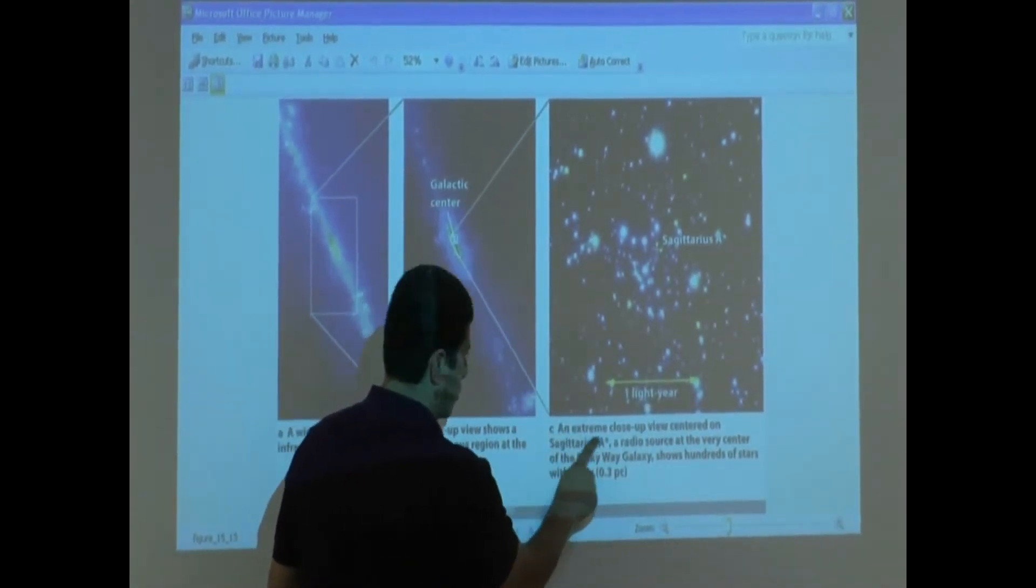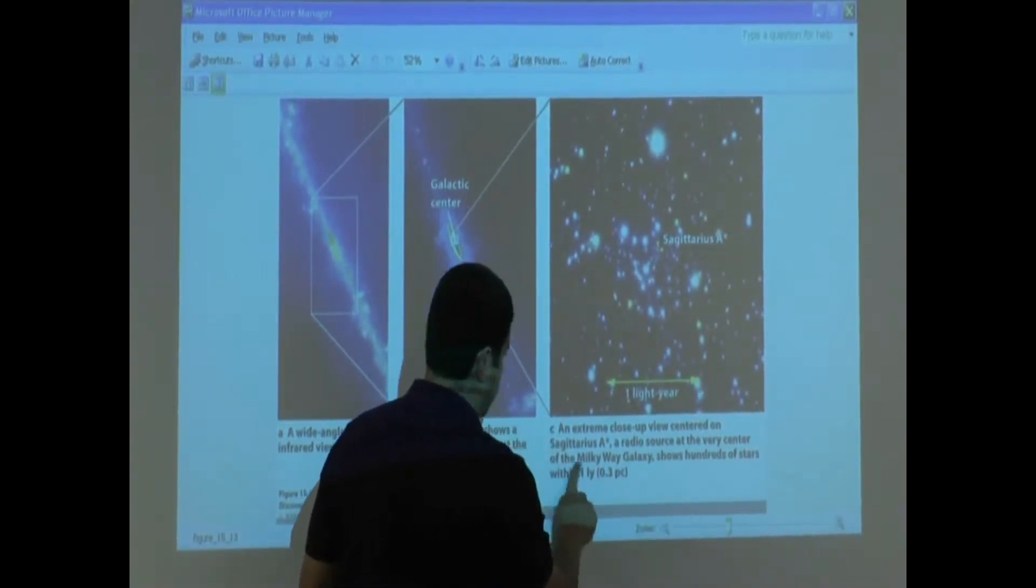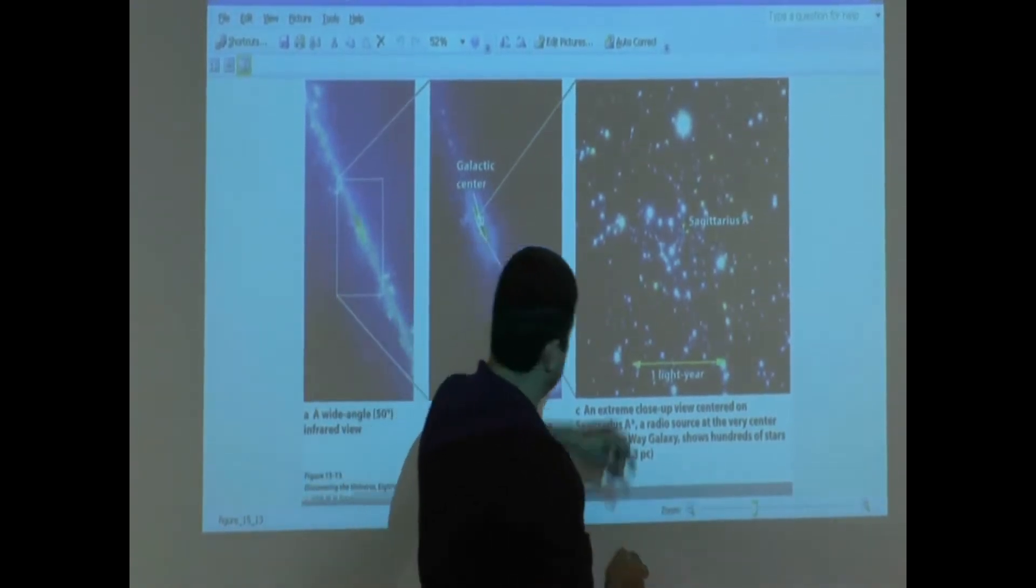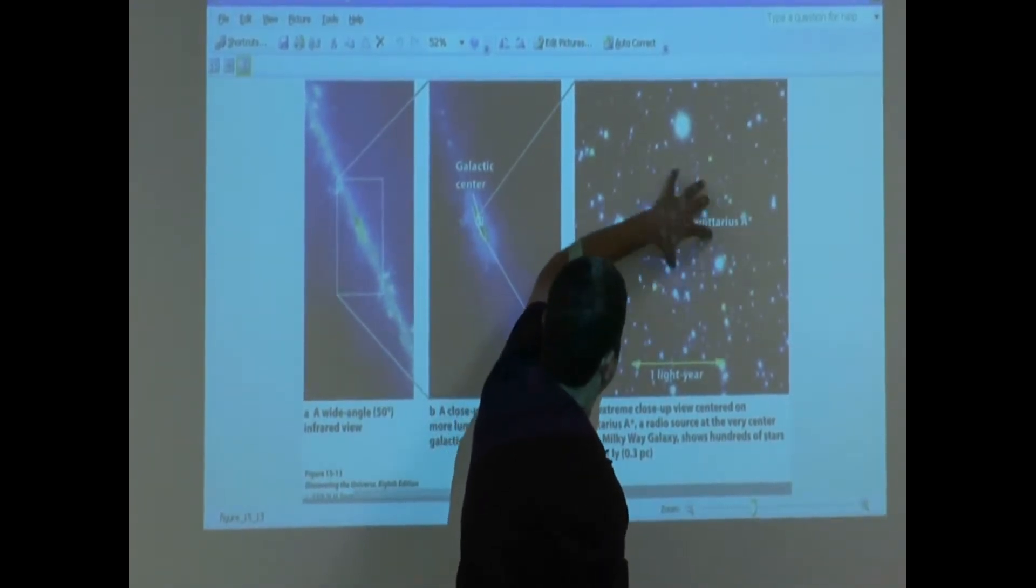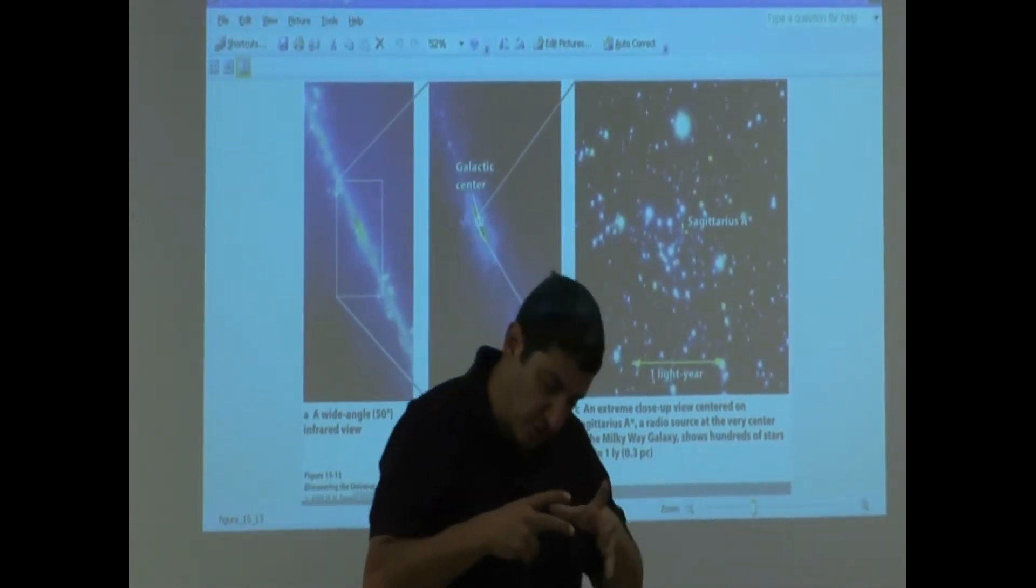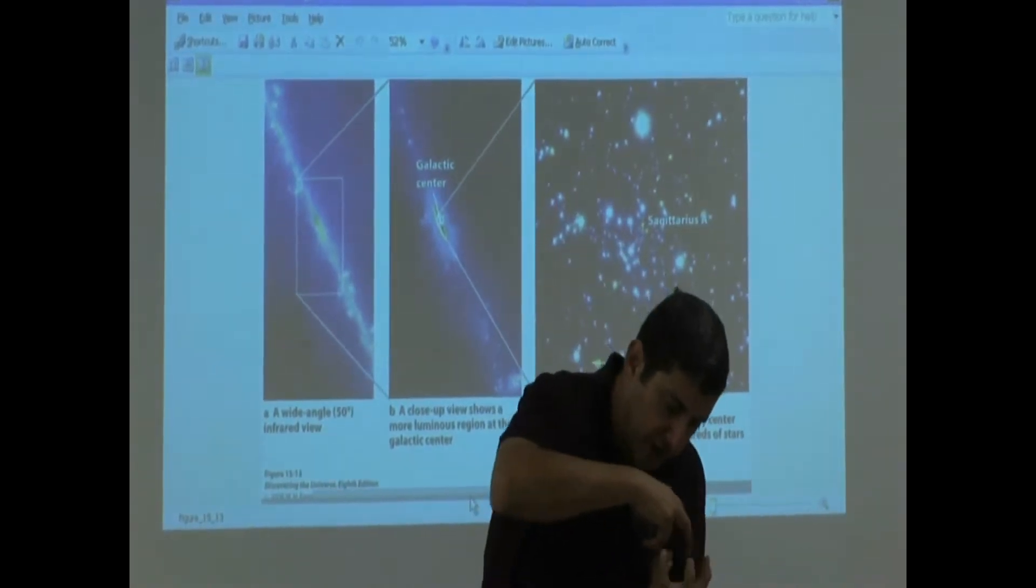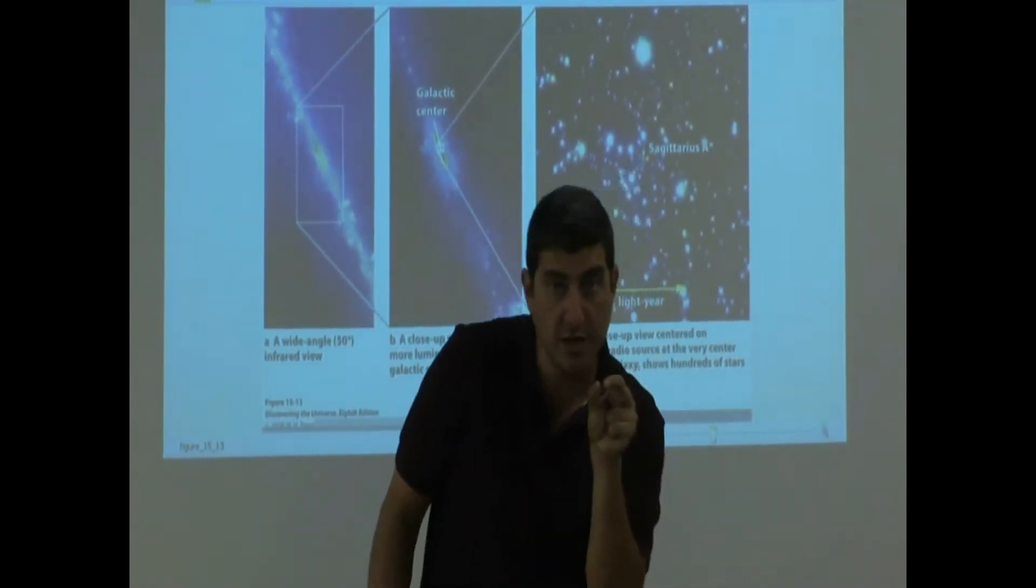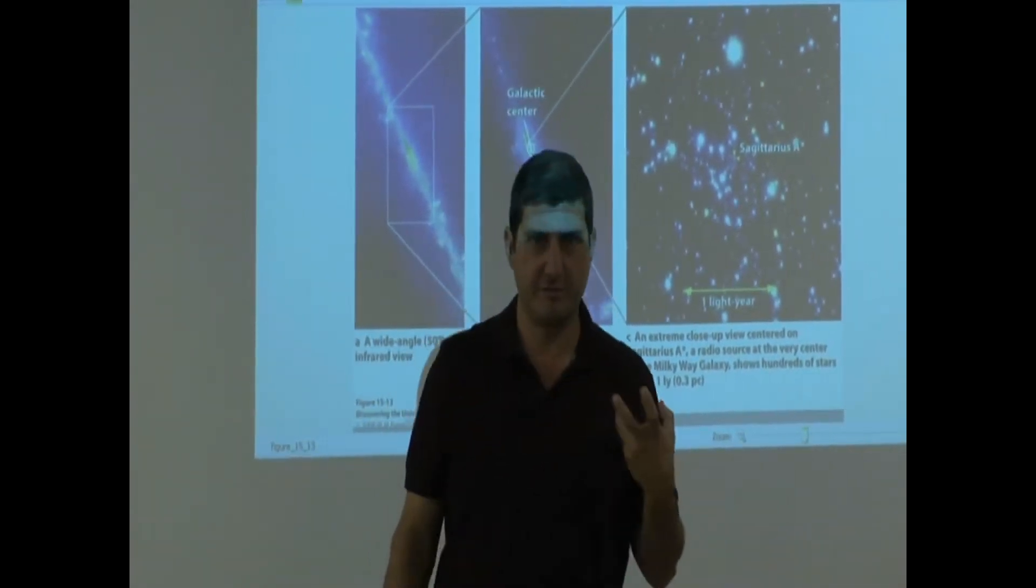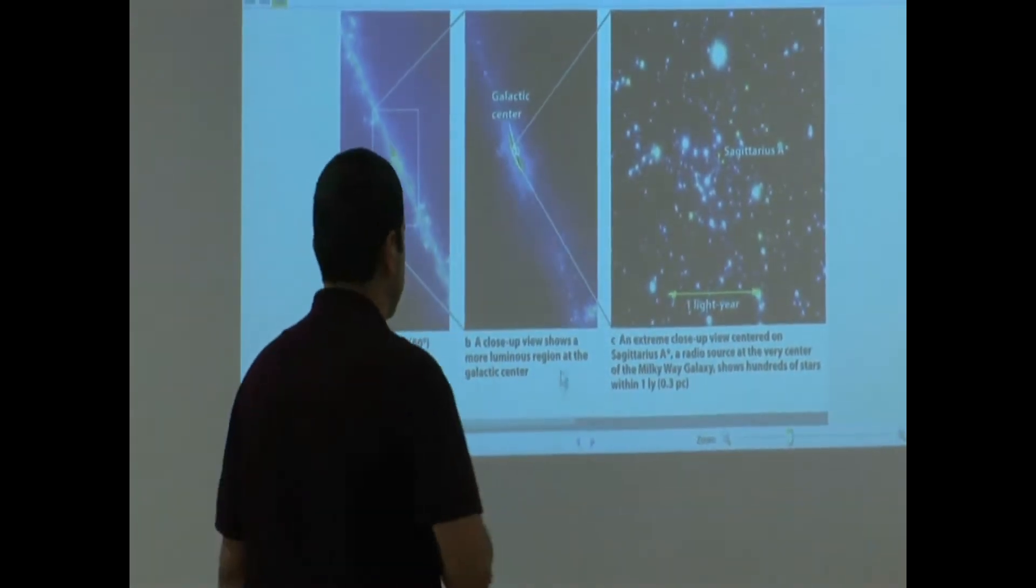An extreme close-up view centered on Sagittarius A, a radio source at the very center of the Milky Way galaxy, shows hundreds of stars within one light year. These hundred stars are all touching each other, bumping and everything, and it's very densely populated. The center has a black hole that's gulping this up, and all this energy is emitting this extreme energy.